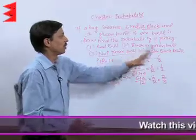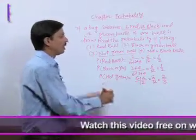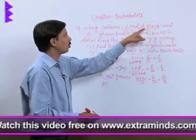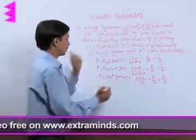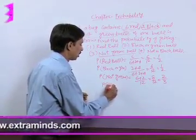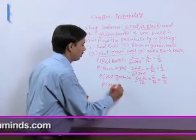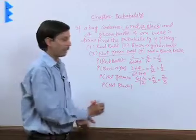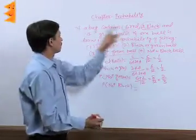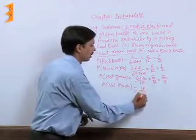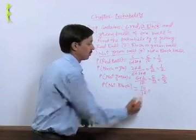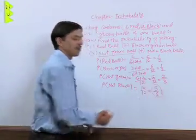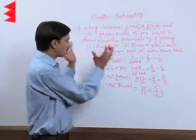For the fourth situation, find the probability of not getting a black ball. We leave out the 2 black balls, so we have 6 plus 4 upon 12, that is 10 upon 12, which simplifies to 5 by 6.